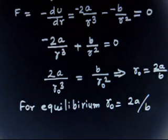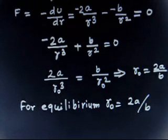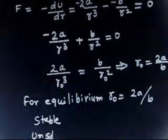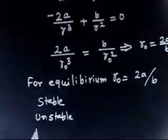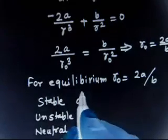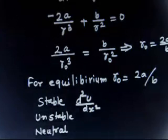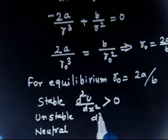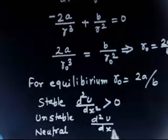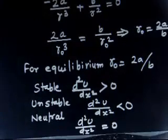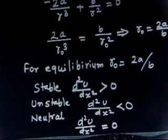Now part B of the question asks whether this equilibrium is stable, unstable, or neutral. There are 3 kinds of equilibrium. For a stable equilibrium, d²U/dR² should be greater than 0 — that is the condition of minima. For an unstable equilibrium, d²U/dR² is less than 0. For a neutral equilibrium, d²U/dR² should be equal to 0. I will use this fact to find whether this equilibrium is stable or not.